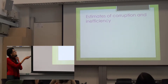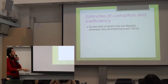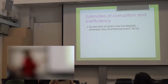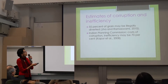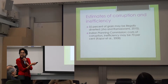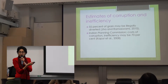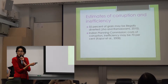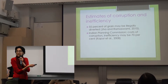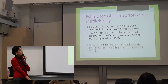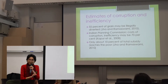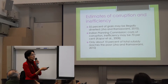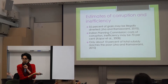Apart from the targeting problems, the PDS also has problems of corruption and inefficiency on a staggering scale. Estimates suggest 55% of the grain may be illegally diverted — basically stolen and sold on the open market. The Indian Planning Commission itself published an estimate of 70% wastage due to corruption and inefficiency. Another estimate is that with all the targeting errors, corruption and inefficiency, only about 10% of the total subsidy actually reaches the poor.